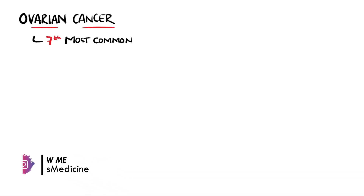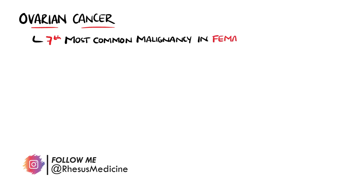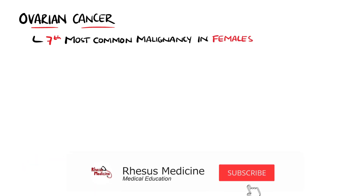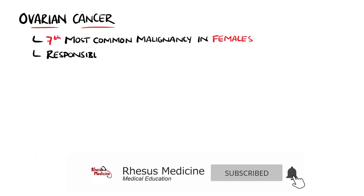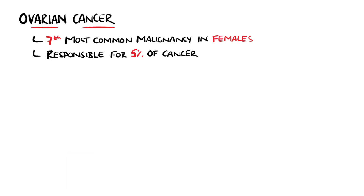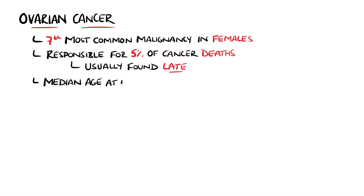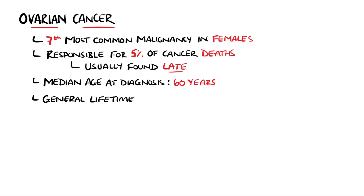Ovarian cancer is an uncommon gynaecological cancer that is the seventh most common cancer found in females. It is often found in later stages due to its nonspecific symptoms and is considered the most lethal of the gynaecological cancers. The median age for patients diagnosed with ovarian cancer is 60, with an estimated lifetime risk of around 1 in 70.